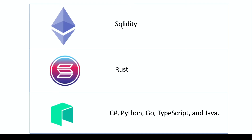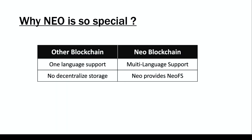With the help of NEO blockchain, you can code your smart contract in C#, Python, Go, TypeScript, and Java. In contrast, Ethereum has only Solidity — a very dedicated programming language specific to Ethereum. The best part about NEO blockchain is that these supported languages are so common that most programmers are already familiar with them, so you do not need to learn any new programming language to create your smart contract.